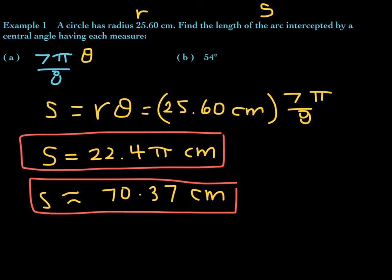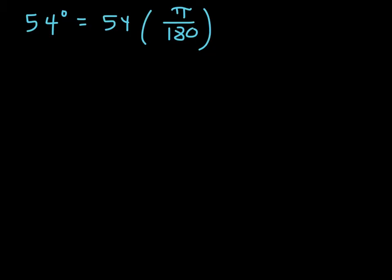For the second problem, in order to use the formula S equals Rθ, we must convert 54 degrees to radian measure first. Taking 54 degrees and converting: the GCF between 54 and 180 is 18. 18 goes into 54 exactly three times, and 18 goes into 180 ten times. So in radian measure, 54 degrees equals 3π/10 radians.